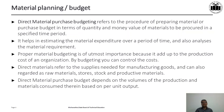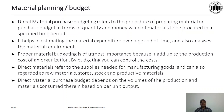Direct material purchase budget depends on the volume of production — you decide on the volume of production and from that you can decide on the quantity to be purchased. Secondly, and very importantly, it depends on the material consumed per unit output. The unit of production may be in numbers, volume such as liters, or weight such as kg.